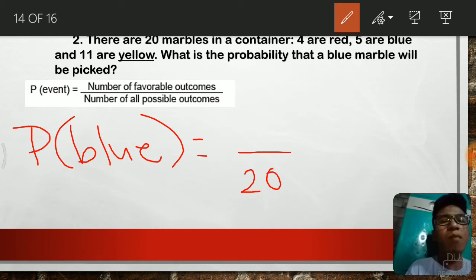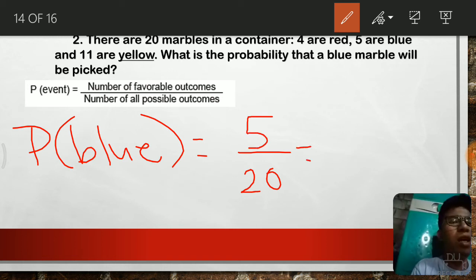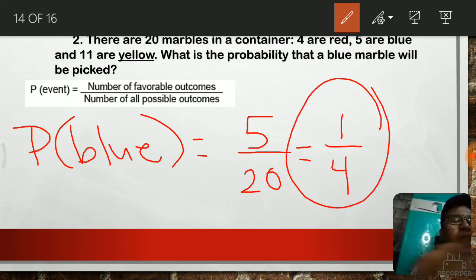How about the number of all favorable outcomes? Since our target, or our event, is to get a blue marble out of that container, meaning there are 5 favorable outcomes. And then, I know that you are well versed in simplifying fractions. Simplifying 5 all over 20 is equal to 1 all over 4. And that's it. This is the answer.